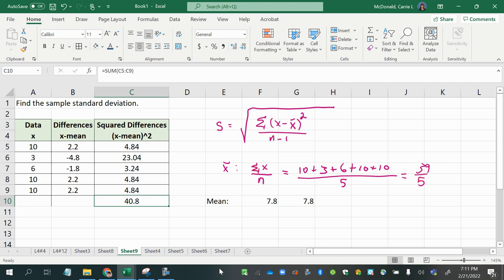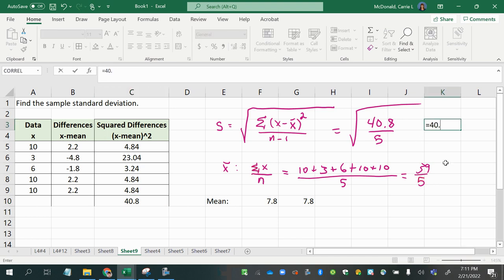So that's what we're going to do next here. So far in my formula, I have the summation of all my squared differences, and I'm going to divide that by 5 so that I can get the average squared deviation. So now 40.8 divided by 5 is 8.16.